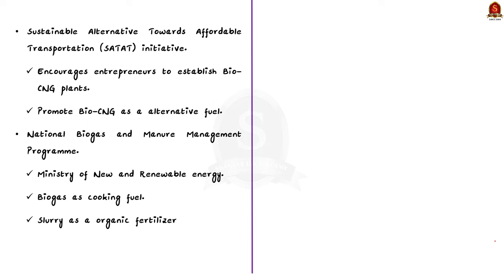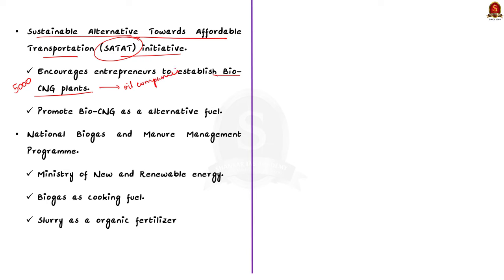Then we have the Sustainable Alternative Towards Affordable Transportation, also known as the SATAT initiative. The government plans to set up 5,000 bio-compressed natural gas plants. This initiative encourages entrepreneurs to establish bio-CNG plants and supply bio-CNG to oil marketing companies for use as automotive fuel. Lastly, the National Biogas and Manure Management Programme is a central sector scheme under the Ministry of New and Renewable Energy, aiming to promote biogas as a cooking fuel and the use of slurry from biogas plants as organic fertilizer.